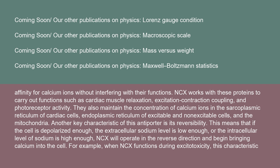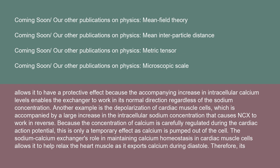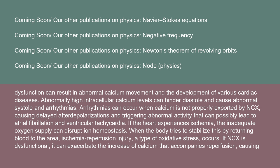For example, when NCX functions during excitotoxicity, its reversibility allows a protective effect because the accompanying increase in intracellular calcium enables the exchanger to work in its normal direction regardless of sodium concentration. Another example is depolarization of cardiac muscle cells, accompanied by a large increase in intracellular sodium that causes NCX to work in reverse — only a temporary effect as calcium is pumped out. NCX's role in maintaining calcium homeostasis in cardiac muscle cells allows it to help relax the heart muscle as it exports calcium during diastole.